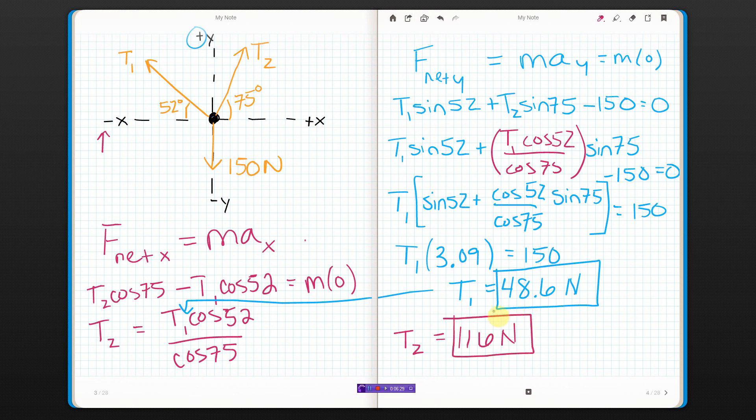Let me just check to see if that makes sense. So this thing weighs 150. Looks like T2's taking the brunt of the weight. That makes sense. T1's really just there to counteract a little bit to the right that T2 has. And hold up a little bit. Those numbers make some sense.